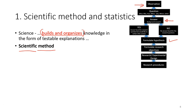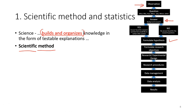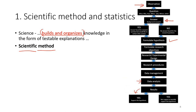Starting from the research objective, we design our experiment, then perform research procedures to collect data. After we collect the data, we manage it and do the data analysis. After analyzing the data, we get the results. Based on those results, we check — usually through a statistical test — whether they support or do not support the hypothesis. In either case, we communicate and report the results: what is the answer to our research questions.